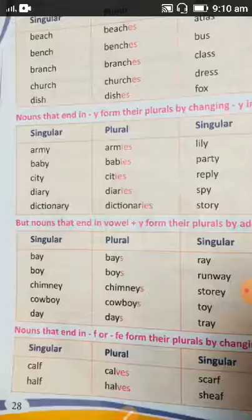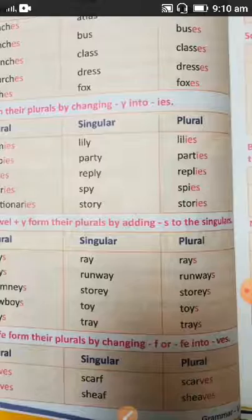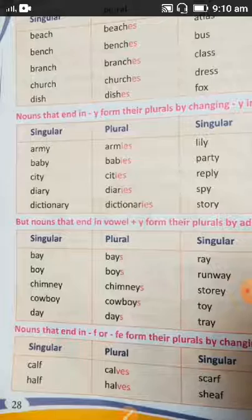Next, some nouns that end in -f or -fe form their plurals by changing -f or -fe into -ves. For example, calf becomes calves and half becomes halves — that is how we make the plural.